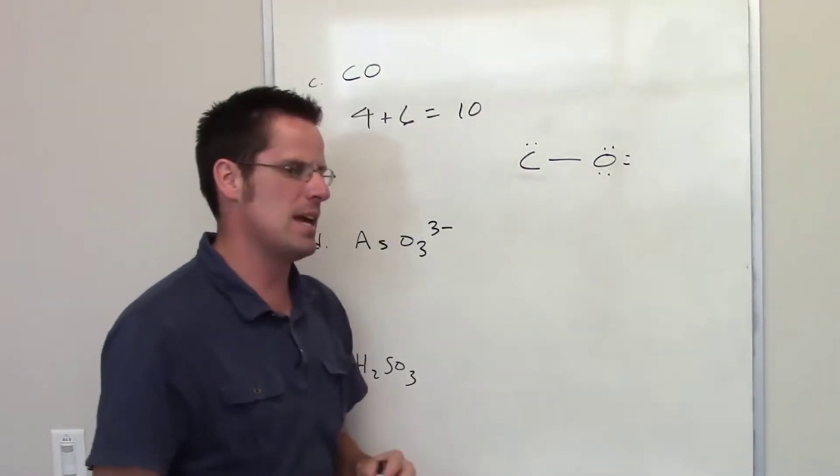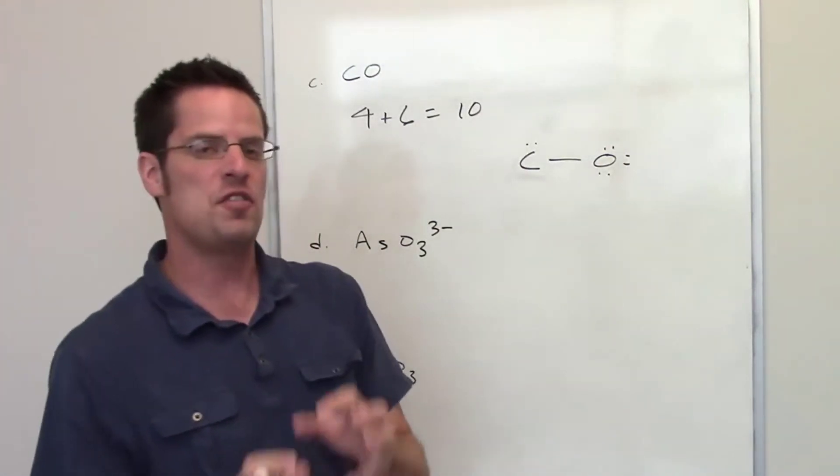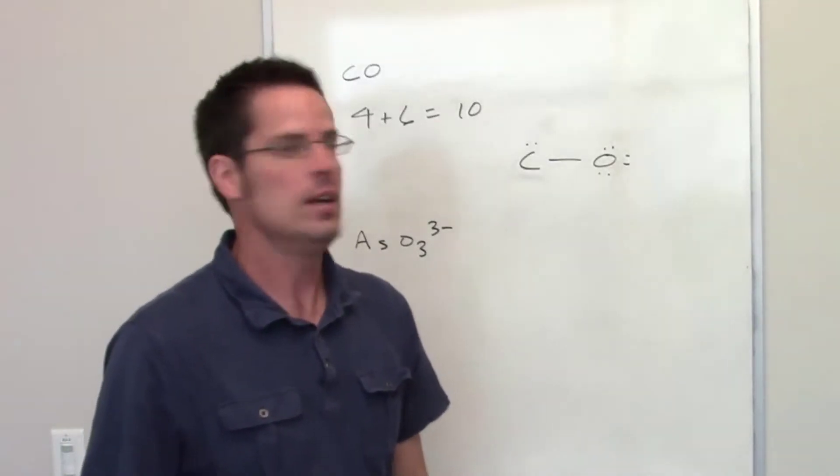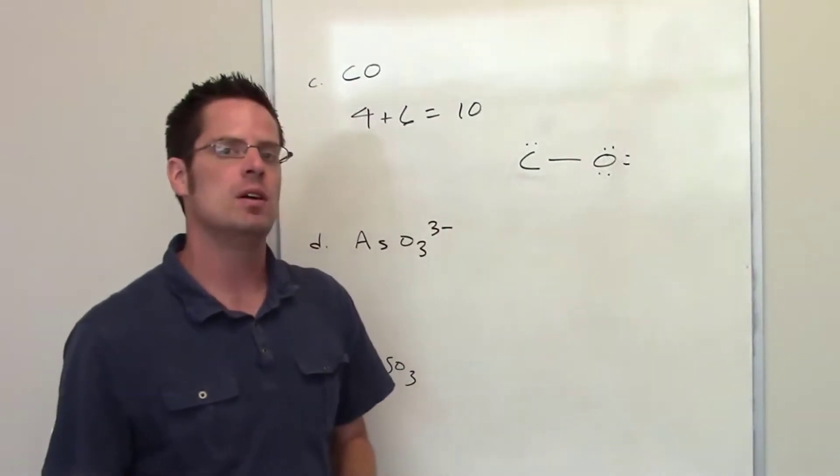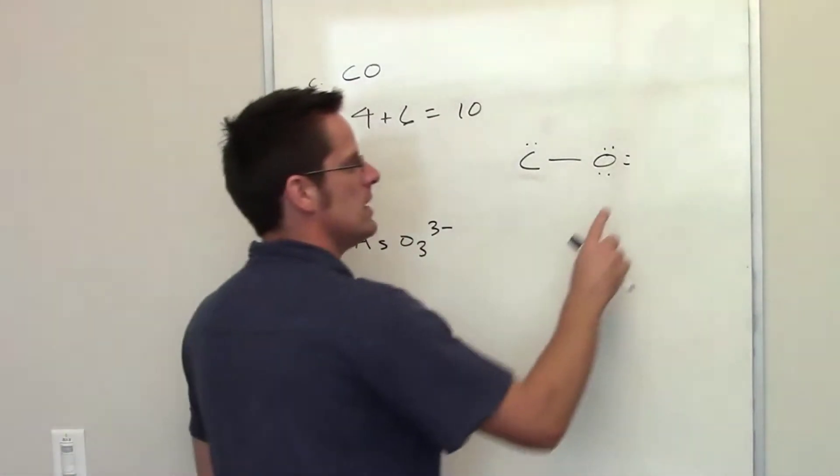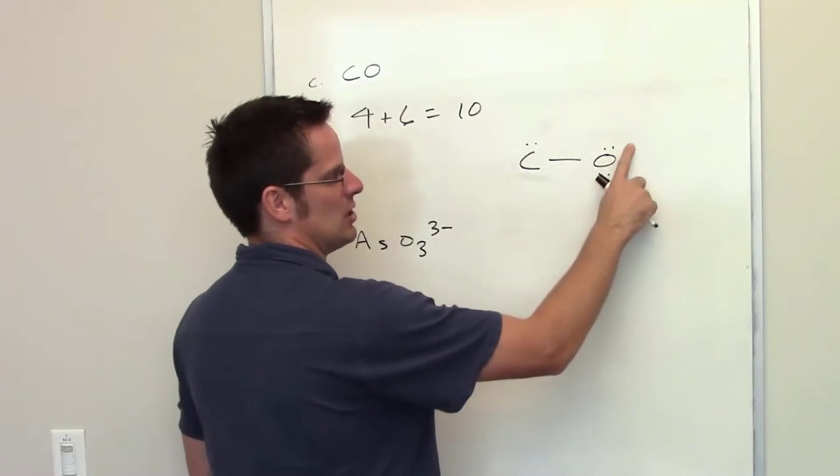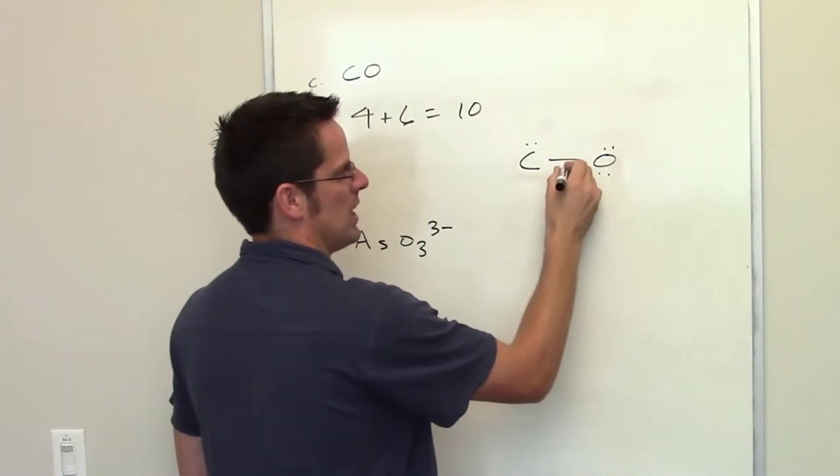So the next step, then, is if you cannot achieve a feeling of full octet-edness for both of the atoms in the molecule, or all of the atoms in the molecule, then try forming double or triple bonds. So what I'll do now is I'll take two of these electrons. I'll just pick arbitrarily these two,